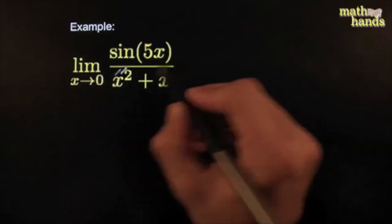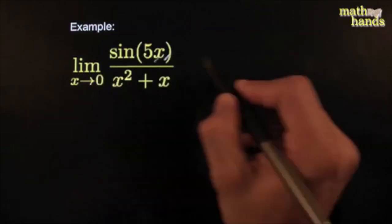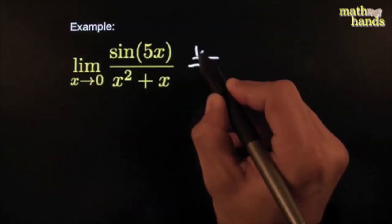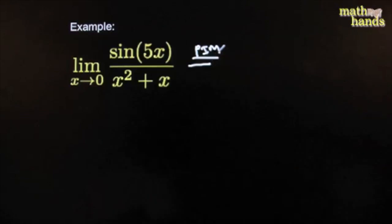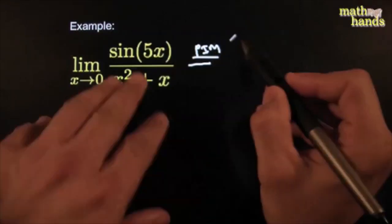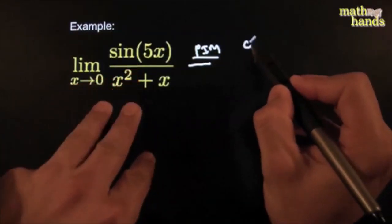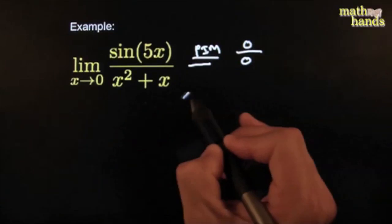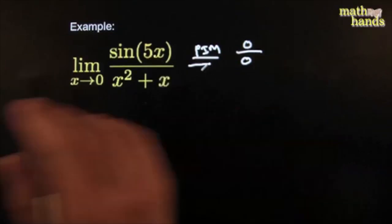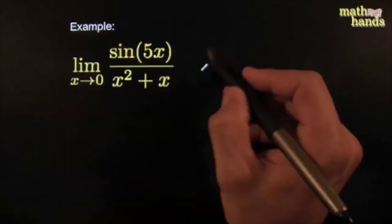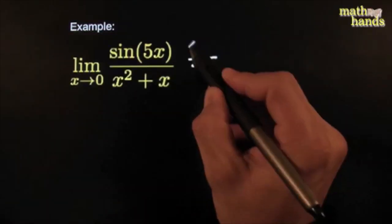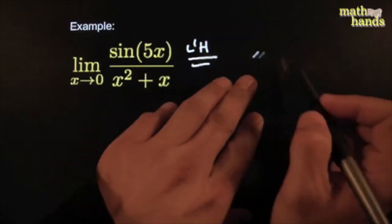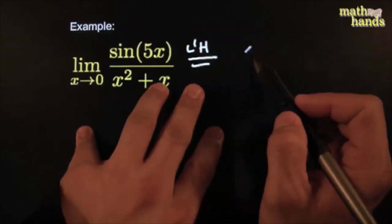So here, x is going towards zero. I see that, so I try my plug-in method, and then I plug it in. There's sine of zero — zero — on the bottom, zero. Perfect. It's got the right form. Let's see if the limit exists. Let's do a little L'Hôpital here. If I get a conclusive limit, I'm good.